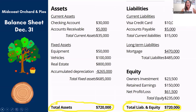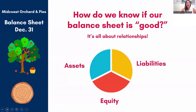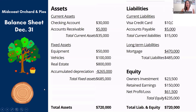So that's the balance sheet — but how do we know if it's good or bad? How do we know if the structure or trunk of our tree, the structure of our business, is healthy? It's all about relationships — healthy and unhealthy relationships between assets, equity, and liabilities. Like we said in the first video, we measure those relationships through financial ratios. Financial ratios compare two things to put them into context.